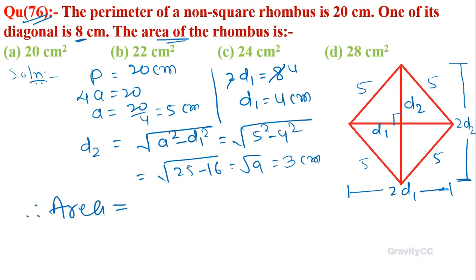Therefore, area of the rhombus is equal to half times diagonal 1 times diagonal 2, so 2d1 times 2d2. The 2s cancel, and d1 is 4 and d2 is 3, so 4 times 3 equals 24 centimeter square. So option C is the correct answer.